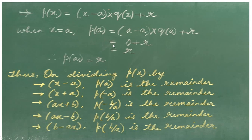So, p of a would be equal to 0 plus r, which is nothing but r. Therefore, p of a is equal to r, which is nothing but the remainder when p of x is divided by x minus a. Thus, on dividing p of x by x minus a, p of a is the remainder. Here, a is nothing but the zero of the divisor x minus a.